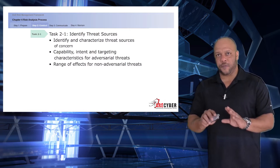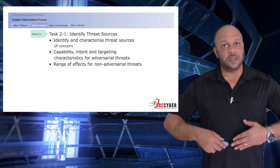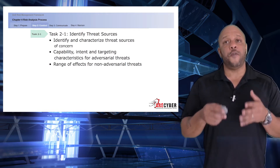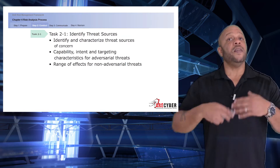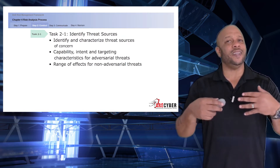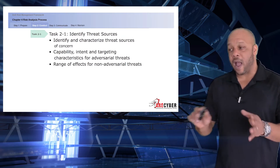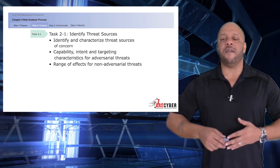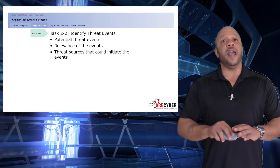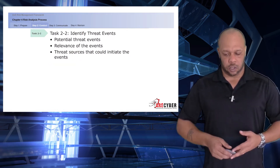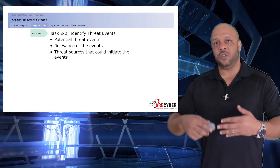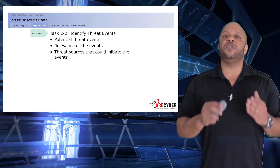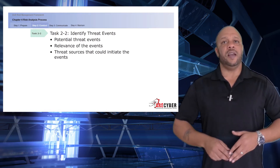That brings us to Step 2. First, identify the threat sources — it's important to identify and characterize all possible threat sources of concern for the information system. Identify the capability, intent, and targeting characteristics for adversarial threats against that system and the range of effects for non-adversarial threats. Next, identify threat events: what is a potential threat event, what is a relevant threat event, and what are the threat sources that could initiate an event?